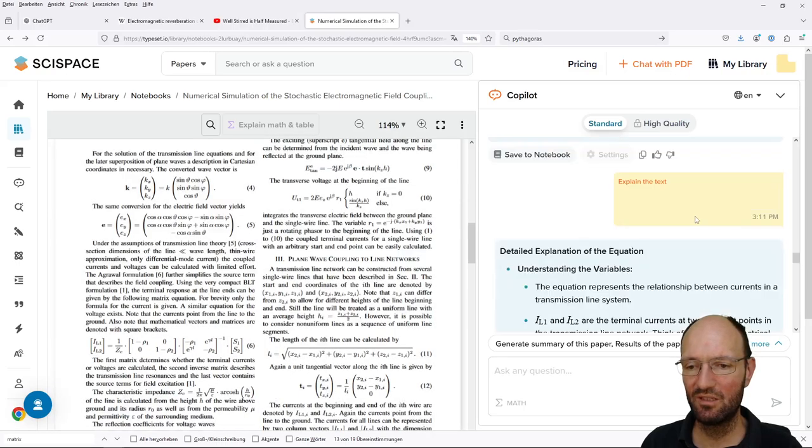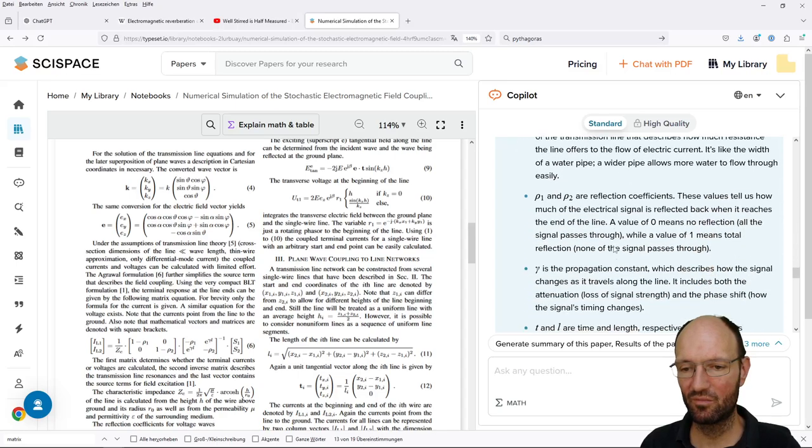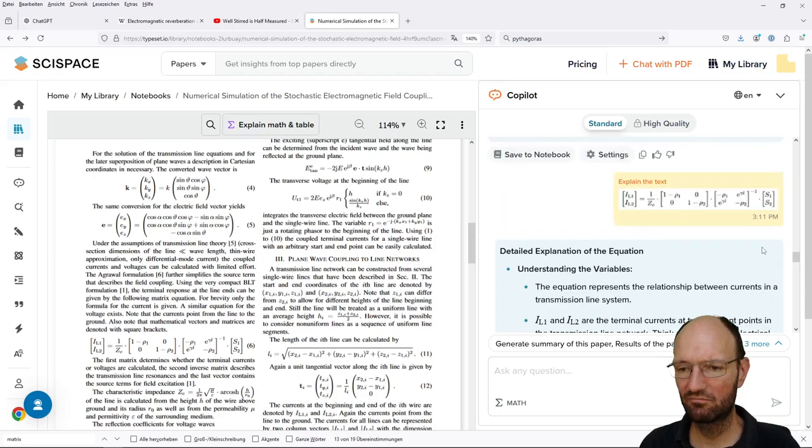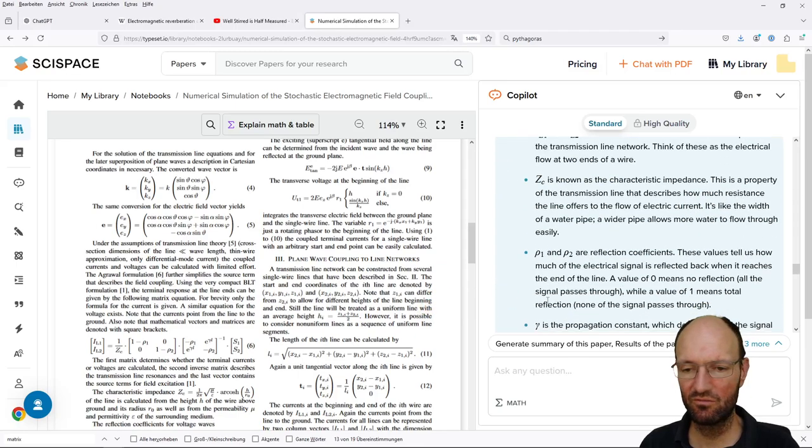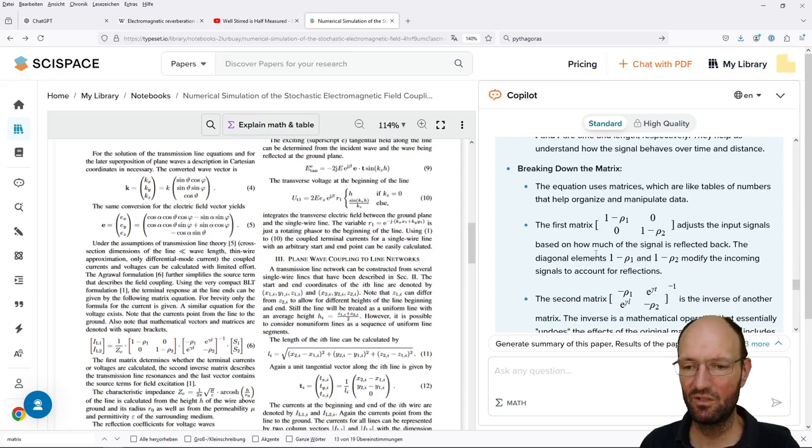Okay, the relationship between currents in transmission line system: terminal currents, characteristic impedance, reflection coefficients, propagation constant, time and length. There's no time in this equation. Why time? I mean, there is no time in this equation.